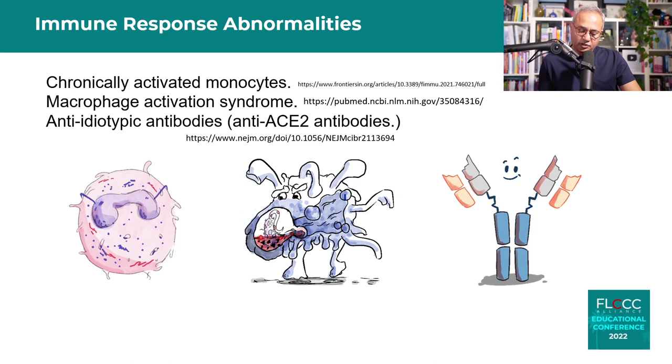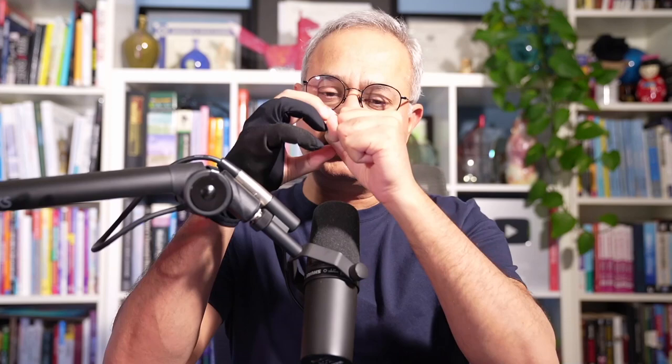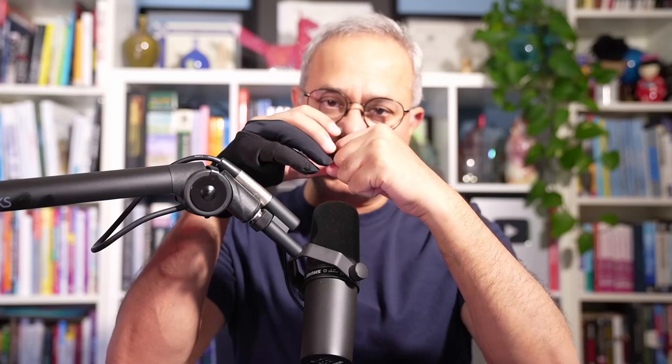Anti-idiotype antibodies are another important mechanism. When spike proteins enter our body, they can bind with ACE2. Our immune system makes antibodies against spike protein — we can call these anti-spike antibodies. The body then makes antibodies against those antibodies to eliminate them, called anti-idiotype antibodies. This process was described in network theory, coined by Neil Jerne in the 1960s.